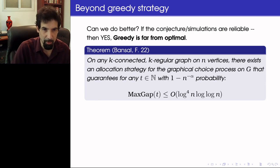So the theorem I want to tell you about today is the following. On any k-connected, k-regular graph on N vertices, there exists an allocation strategy for the graphical choice process on G that guarantees for any number of allocations T with high probability, the maximum gap is of polylogarithmic order, in particular log⁴ N log log N.